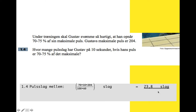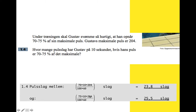If it's 75% of his maximum, then it's 75 hundredths of 10 sixtieths, with 10 on the top and 60 on the bottom, of his normal maximum pulse of 204 on the top. And that comes to 25.5. So if he's at between 70 and 75% of his maximum pulse, that will be between 23.8 and 25.5 beats in 10 seconds.